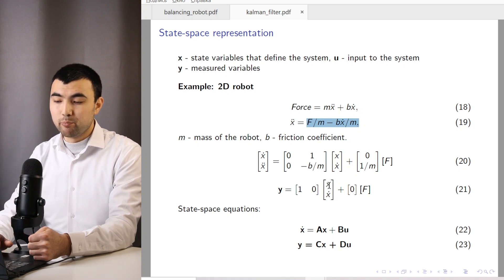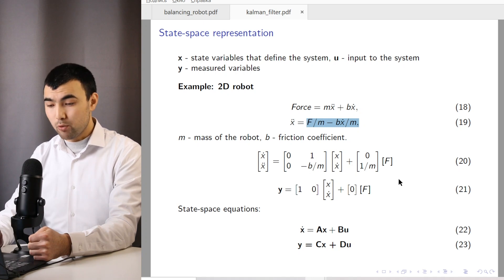And for X double dot, we just use this expression and we insert the corresponding gains. And for measured variables, we just measure the position. So we have 1, 0. So finally, we obtained the state-space equations. So this is A matrix, this is B, this is C and D.